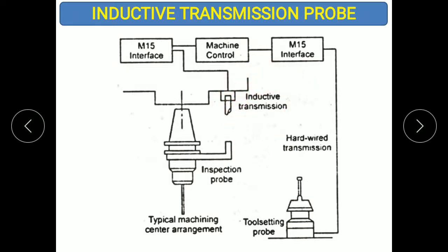In the inductive transmission probe, the probe comes in contact with the workpiece. The machine control system is the electronic part which plays an important role in transmitting the displacement signals into electronic signals. This is the inspection probe — the inductive transmission system used to sense and relay measurement data.